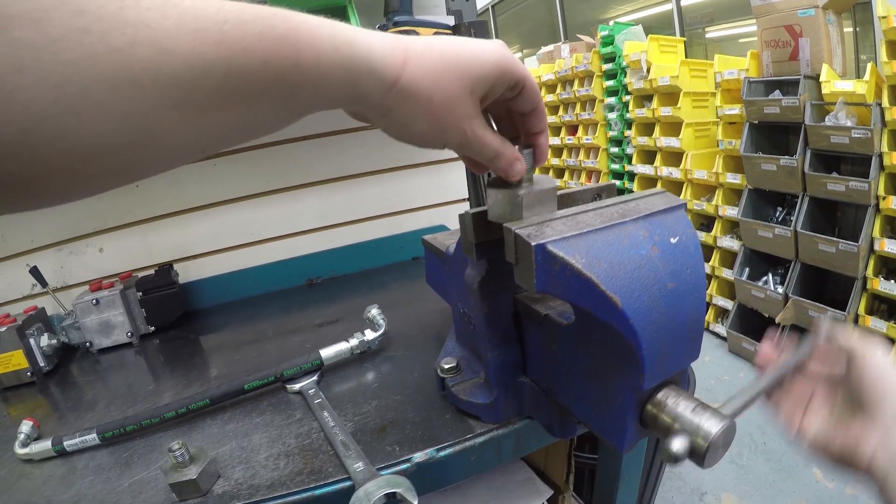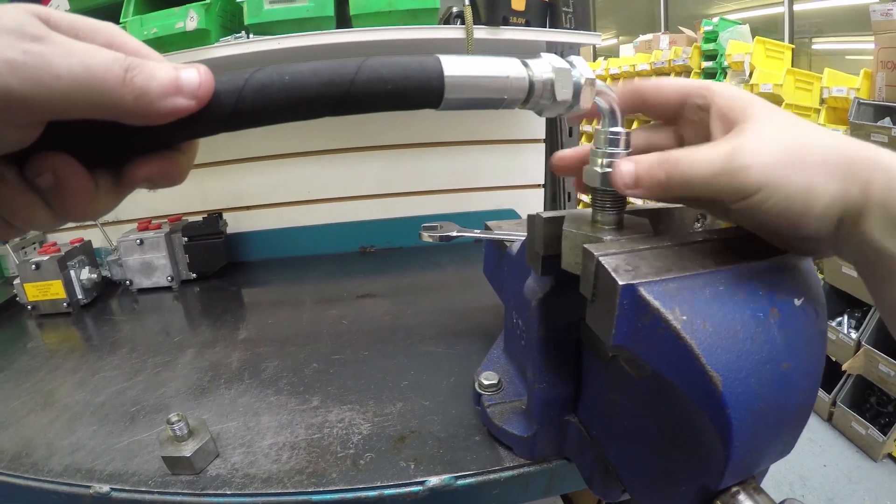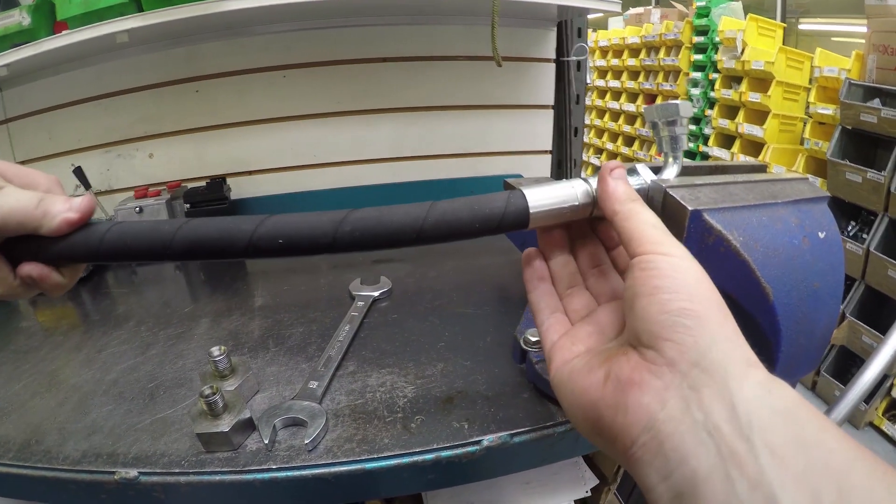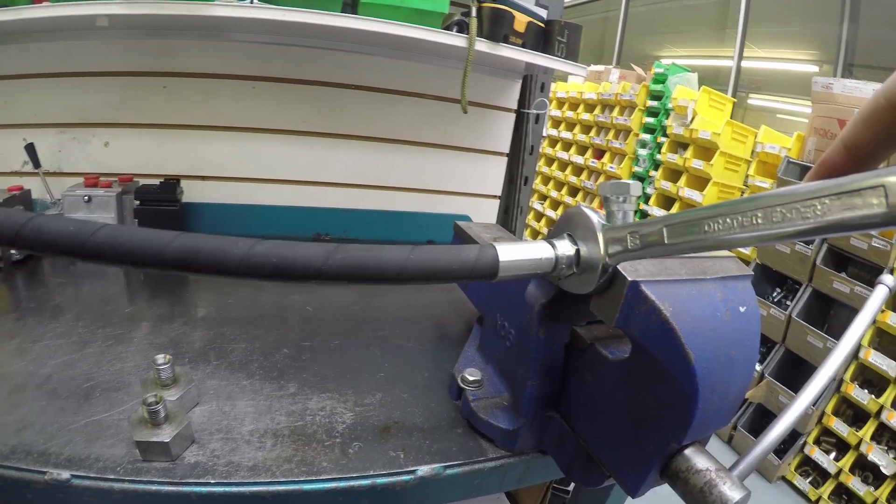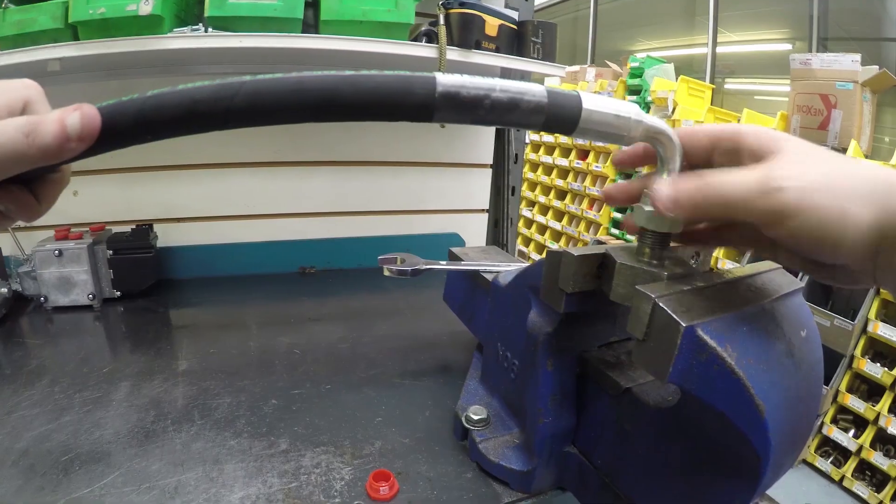Step one is to ensure that you have the correct adapters to join the assembly to the assembly plate that is positioned within the rig. You may need to use additional adapters when joining the pipe to the test ports. Should you need to do this, ensure that the fittings are regulated to a high enough working pressure to allow you to test safely.